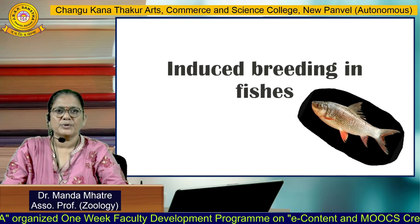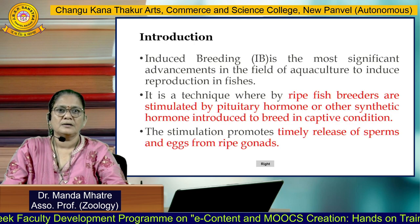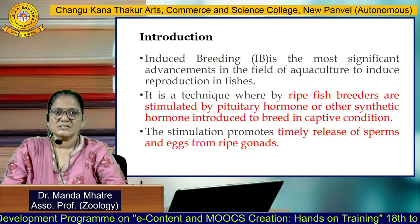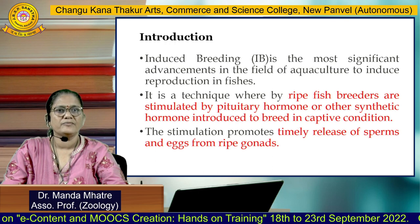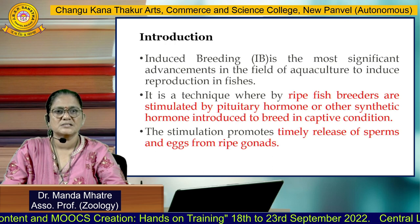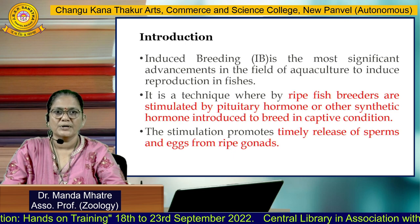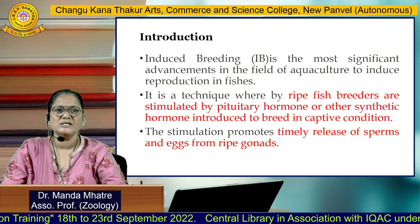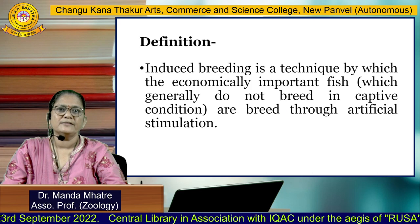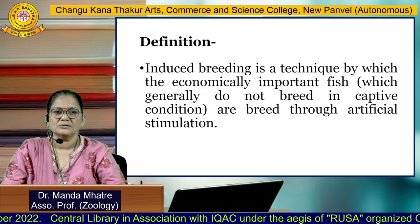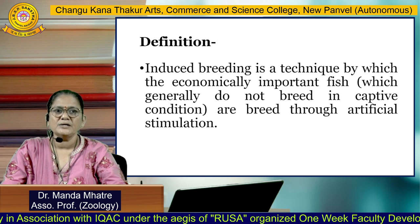We are going to study induced breeding in fish. Induced breeding is the most significant advancement in the field of aquaculture. It is the technique whereby ripe fish breeders are stimulated by pituitary hormone or other synthetic hormones to breed in captive conditions. It is a technique by which economically important fish that generally do not breed in captive conditions are made to breed through artificial stimulation.